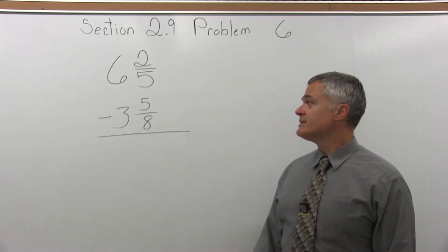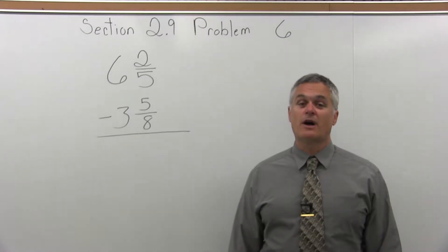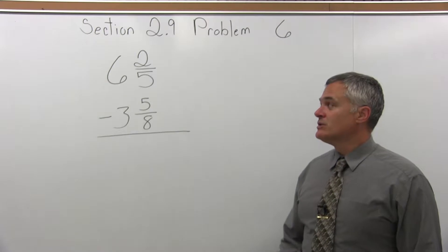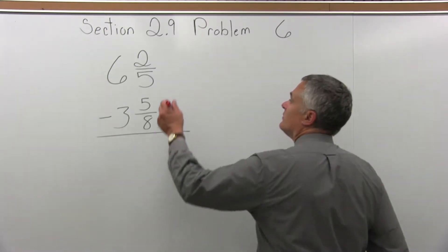It says 6 and 2/5 minus 3 and 5/8. So we have to find the common denominator. One denominator is 5 and the other is 8, so a good common denominator would be 40.